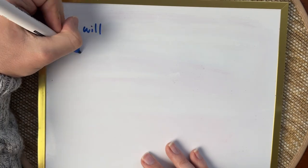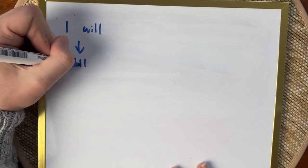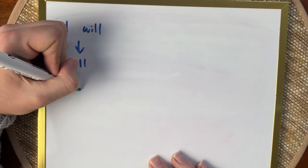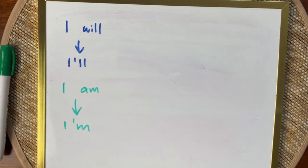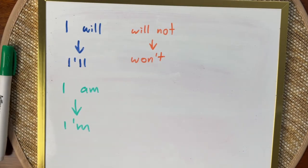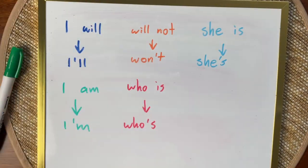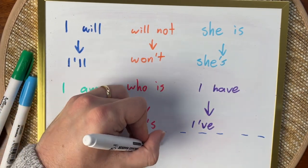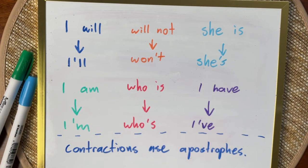I will now give another example. I can contract 'I' and 'will' by getting rid of the W and I to make 'I'll.' There are plenty more of these: 'I am' can become 'I'm,' 'will not' can become 'won't' — and that's a weird one because we also switch the I for an O. 'Who is' becomes 'who's,' 'she is' becomes 'she's,' 'I have' becomes 'I've,' and the list goes on. When we shorten two words by joining them together and getting rid of one or more letters, we get contractions, and they get an apostrophe where we've gotten rid of the letters.